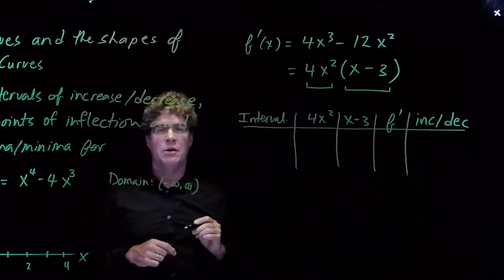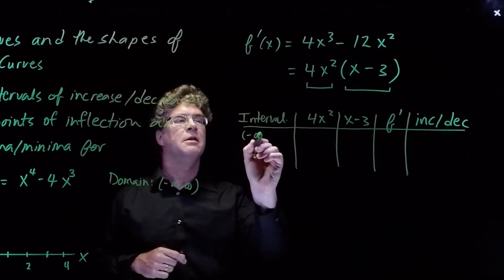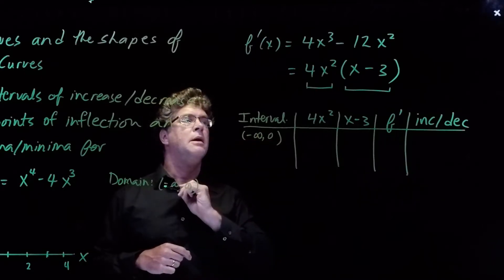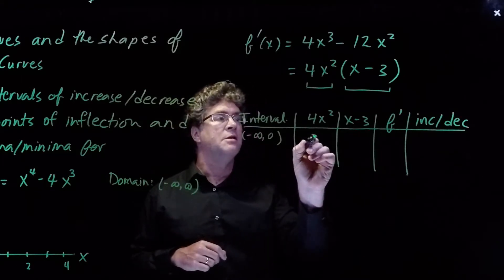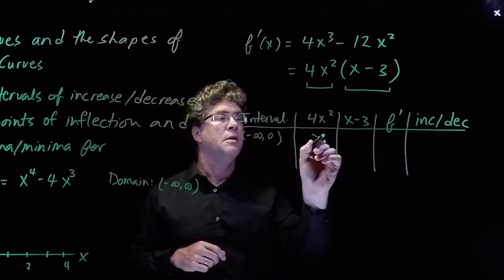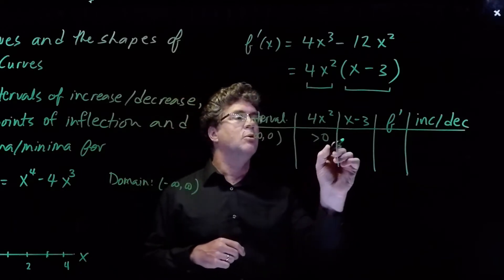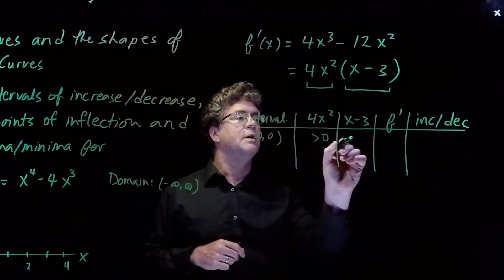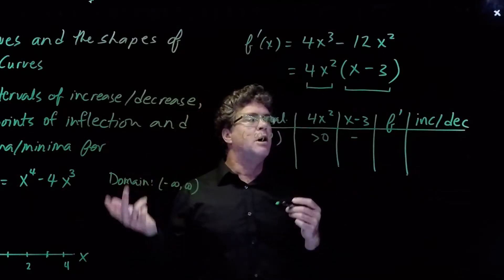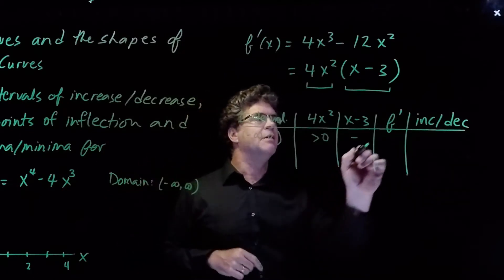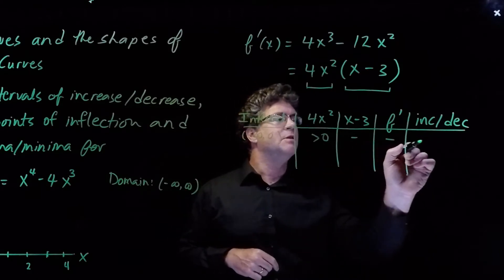On the interval minus infinity to zero, 4x squared is going to be positive, and x minus 3 will be negative. So f prime will be a positive times a negative, which is negative. And so the function is decreasing.